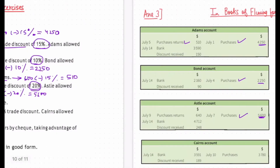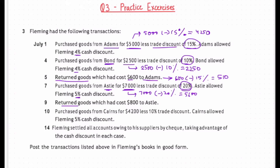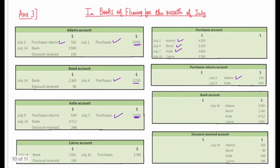July 9th — returned goods which had cost $800 to Aster. Again, the trade discount needs to be adjusted. Therefore, $800 minus the trade discount applicable for Aster, which was 20% — so $800 minus 20% of $800, which will be $640. This will be recorded by the entry Aster account debit to Purchase Returns. In Aster account, Purchase Returns account will be debited, and in Purchase Returns account, Aster account will be credited.